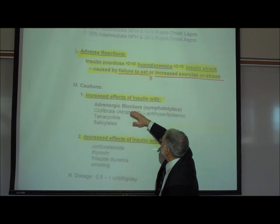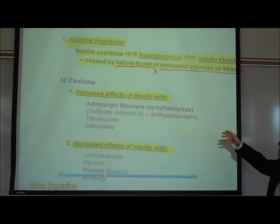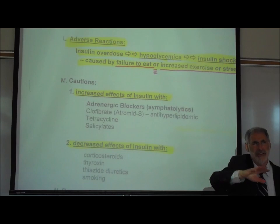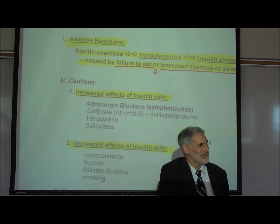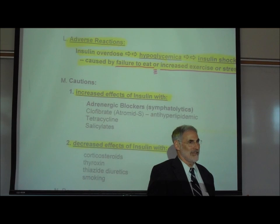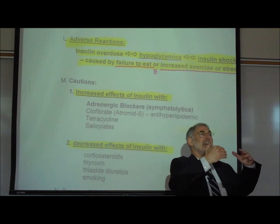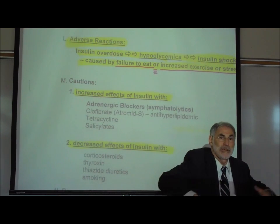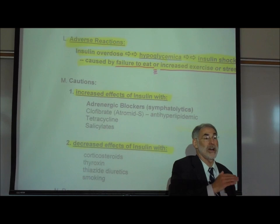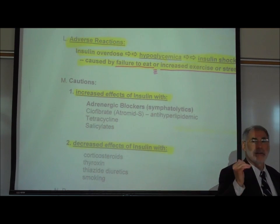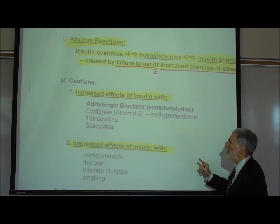Insulin will have an increased effect if the patient is on a beta blocker or adrenergic blocker. Beta blockers block the sympathetic response — they block the effect of adrenaline, which normally raises blood sugar. So an adrenergic blocker prevents blood sugar from rising due to epinephrine, meaning blood sugar levels will already be lower than normal. Combined with insulin, the two together may lower blood sugar too much, so caution is required.